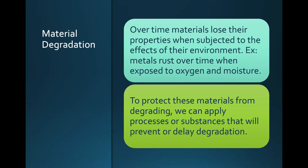Over time, materials will lose their properties because of the environment — the environment has an effect on those materials and they will decay, so their properties are no longer optimal. An example would be metal that's rusting because it's in contact with oxygen and moisture, which changes its chemical composition and makes it less strong.